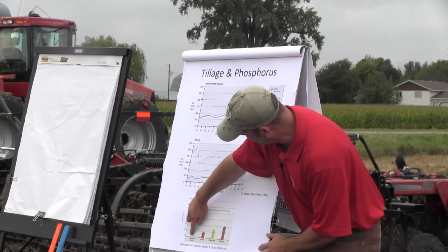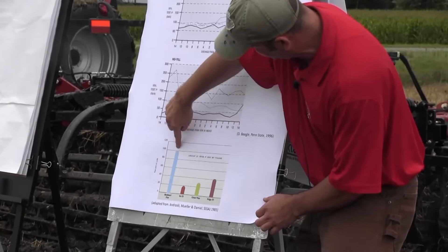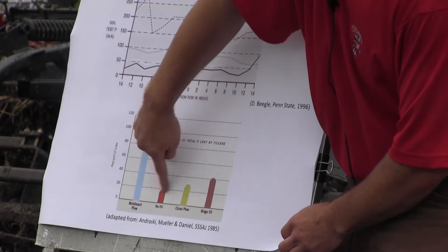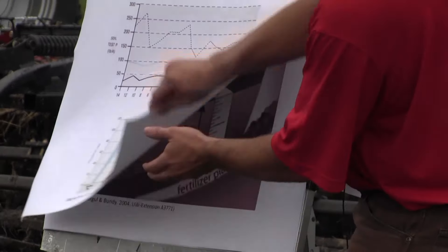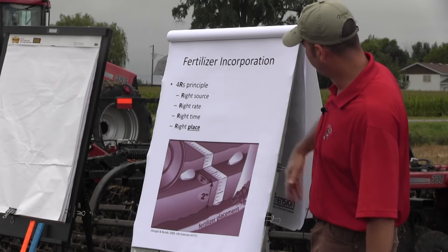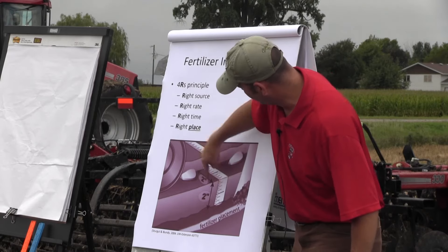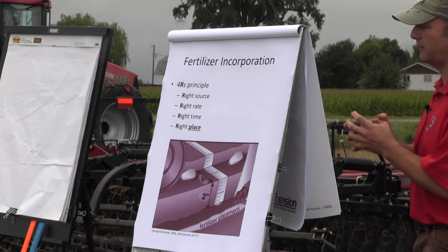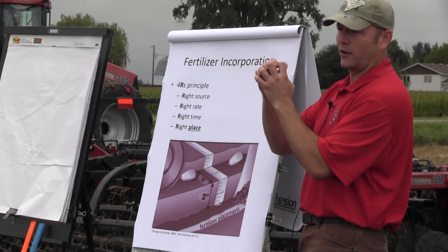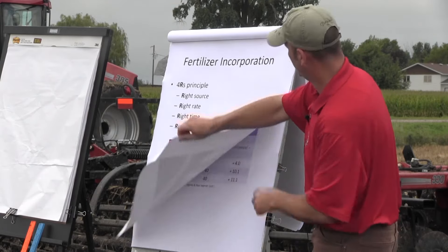Looking at phosphorus loss: averaged over several years, moldboard plow, no-till, chisel plow, and ridge till — obviously the higher the disturbance, the higher the chance of losing phosphorus in runoff and erosion. Regarding fertilizer incorporation and the Four R's: a 2x2 band for phosphorus is recommended because phosphorus can be bound to the soil quickly. If you broadcast, it's not as available. If you band it close to the root system, it's more concentrated and less likely to bind to soil, making it more available to your plant.